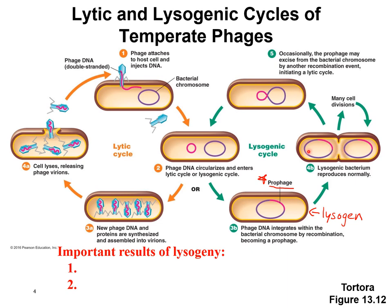But if the environment turns bad, the virus senses that and cuts the prophage out of the chromosome. Then it enters the lytic cycle, makes new virus, lyses the bacterial cell, and goes to find a new host cell to start the cycle again — because it senses that the bacterial cell is going to die and needs to find a new place to live.